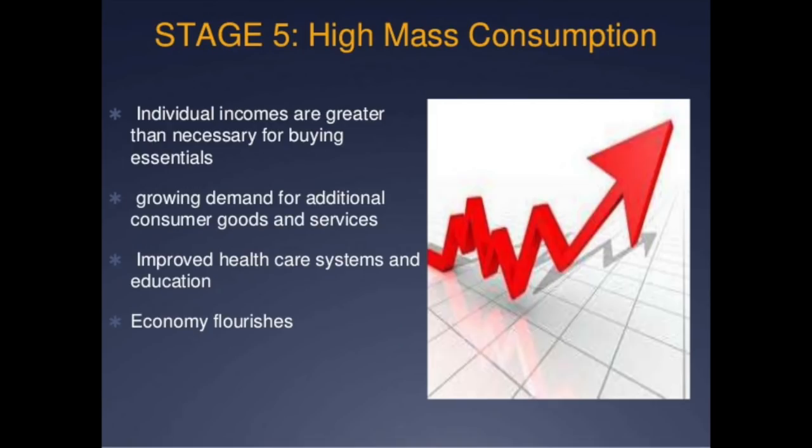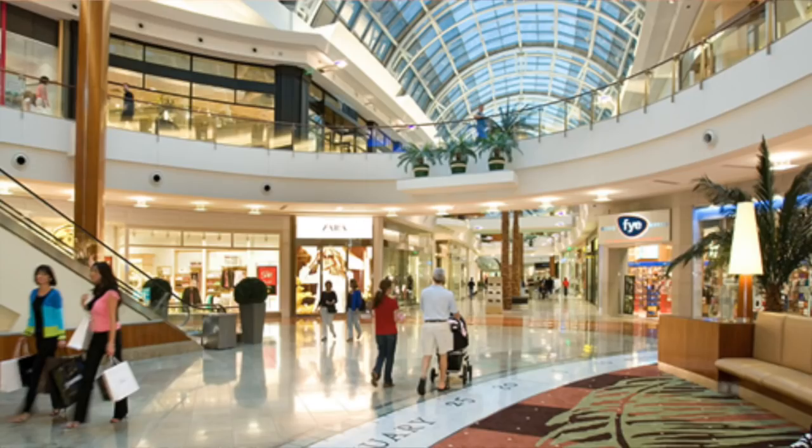Stage five of Rostow's model is called the age of mass consumption. This is the stage where you're really designing things and selling them rather than making them — designing the computer, designing the car, not making the steel. You have a lot of stores and go through a lot of consumables; you're consuming things in mass quantities and tossing them out. Countries in this stage include Japan, the United States, Canada, and Western European nations like the United Kingdom, France, and Germany. Most countries want to work their way through these stages, but they don't always make it to stage five.